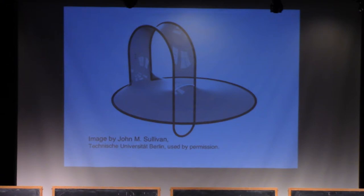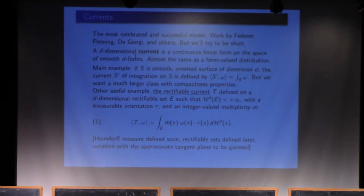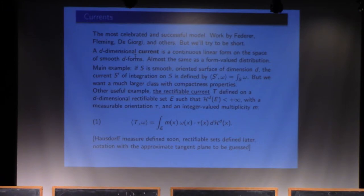There is a second drawback of the parametrization approach: we decided to parametrize by a disk, but there are beautiful soap films that are better parametrized by something else — a torus, a disk with a handle, or similar. You would have to decide in advance what to parametrize your minimal set by. The disk was the obvious choice, but it's not the only nice set bounded by a circle.